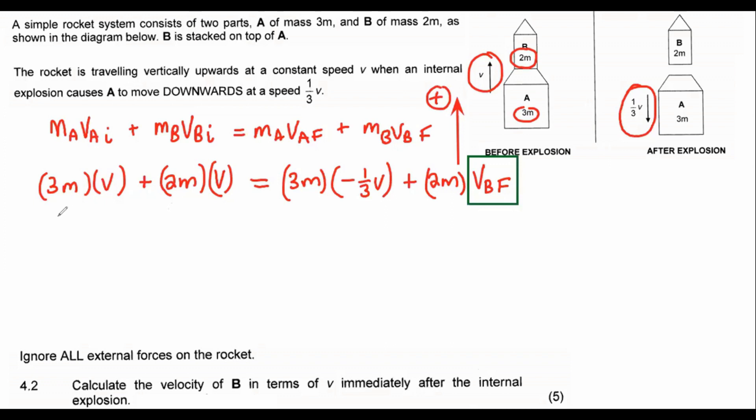So now what we do is we just go ahead and simplify. So this will become 3mv plus 2mv equals. Now this part here, you can just multiply the 3 and the minus third together, but you should get negative v or negative 1mv plus 2m v of B final. Jeez, imagine showing this to like someone in grade eight, they would be terrified of grade 12. So what we can do now is we can add these two together. I know some of you are probably thinking, what do you mean, Kevin? I'm terrified and I'm in grade 12. So 5mv is equal to minus 1mv plus 2m v of B final.